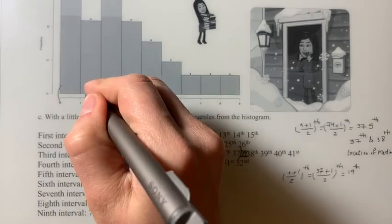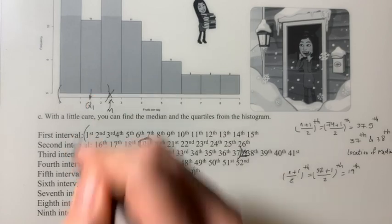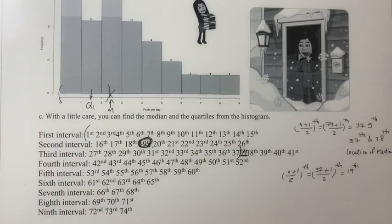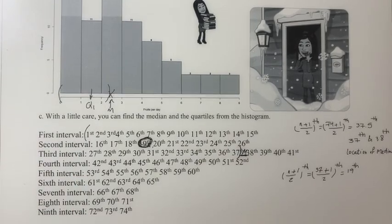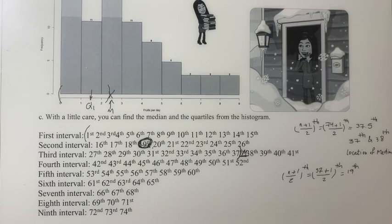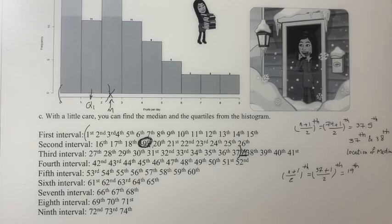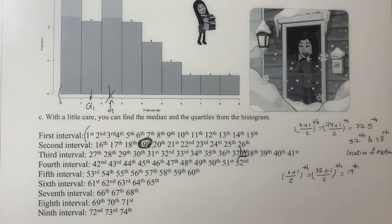So Q1 is somewhere here. Correct? So Q1 is the observation that serves one fruit per day. Okay, so this was Q1.